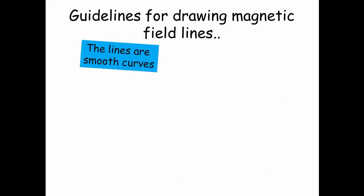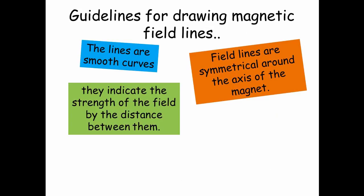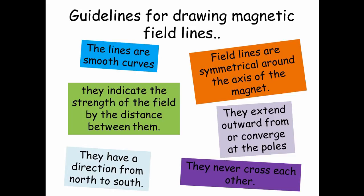Guidelines for drawing magnetic field lines. The lines are smooth curves. The field lines are symmetrical around the axis of the magnet. They indicate the strength of the field by the distance between them. They extend outwards from or converge at the poles. They have a direction from north to south, and they never, ever cross.